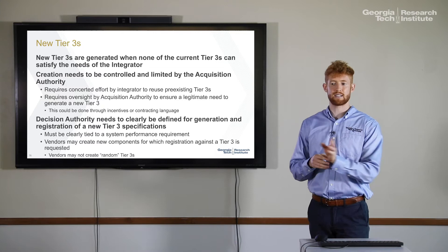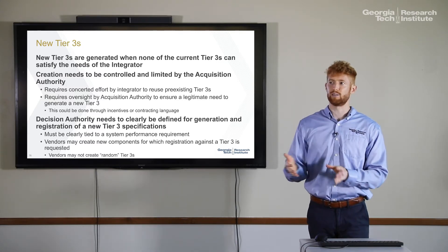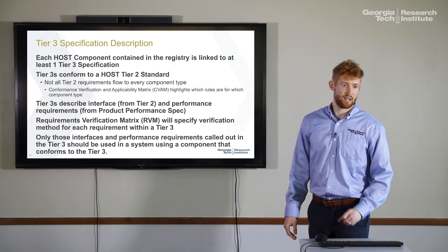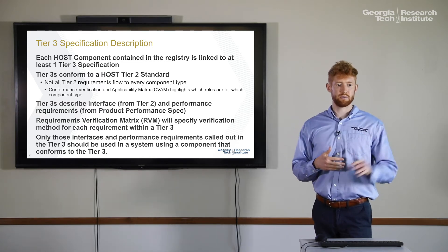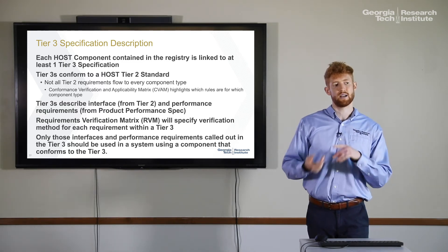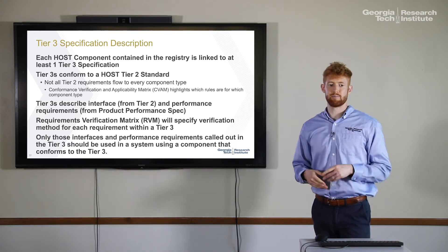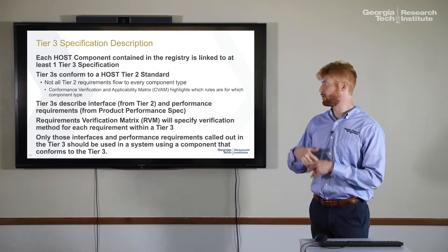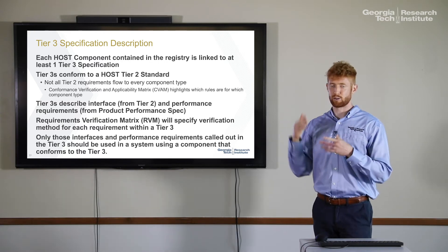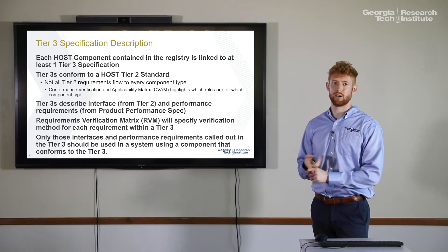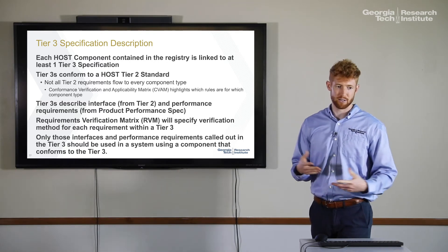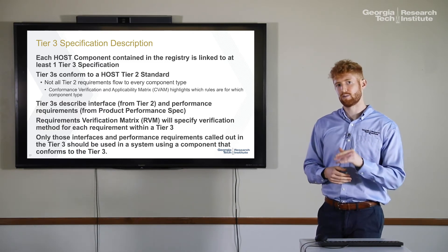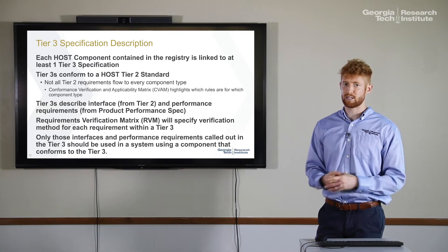When you select a component from the registry, you know you're using a component that's used on another system. Each component in the registry is linked to at least one tier three specification, so you know it conforms not only to a tier three but also, flowing up, to a tier two standard. Not all tier two requirements flow to every component type — if you utilize a CVAM, you'll see which requirements flow down to which component types. A switch will have different requirements than an SBC, for example. Tier threes are a combination of the tier two interface definition and performance requirements from your product performance specification.